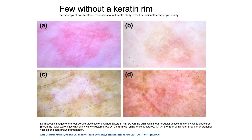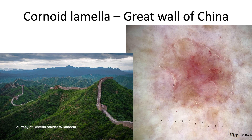Some cases present without a keratin rim, which will be the most difficult and probably requires a biopsy. But if we go back to the cornoid lamella, which creates the keratin rim, we describe it like the Great Wall of China. It has like two rims to it — sort of two lines on either side of the wall. That double rim effect is a nice way of thinking about it, using the Great Wall of China as a metaphor.